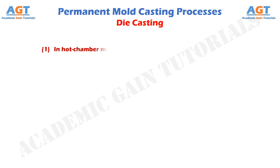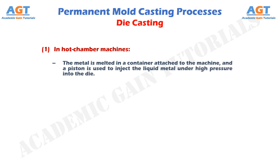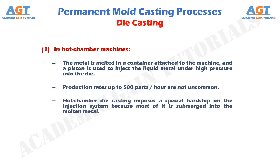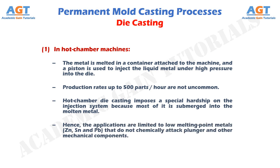In hot chamber machines, the metal is melted in a container attached to the machine, and a piston is used to inject the liquid metal under high pressure into the die. Production rates up to 500 parts per hour are not uncommon. Hot chamber die casting imposes a special hardship on the injection system because most of it is submerged in the molten metal. Hence, the applications are limited to low melting point metals — zinc, tin, and lead — that do not chemically attack the plunger and other mechanical components.